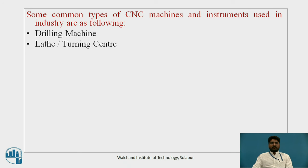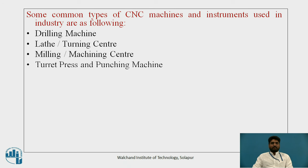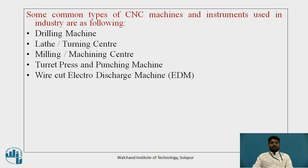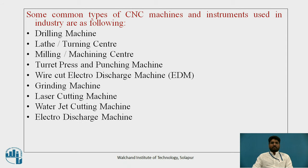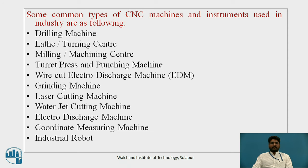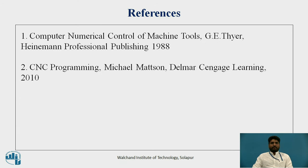Some common types of CNC machines and instruments used in industry are: drilling machine, lathe or turning centre, milling or machining centre, turret press and punching machine, wire cut electro discharge machine (EDM), grinding machine, laser cutting machine, water jet cutting machine, electro discharge machine, coordinate measuring machine, and industrial robot. References include computer numerical control of machine tools and CNC programming.